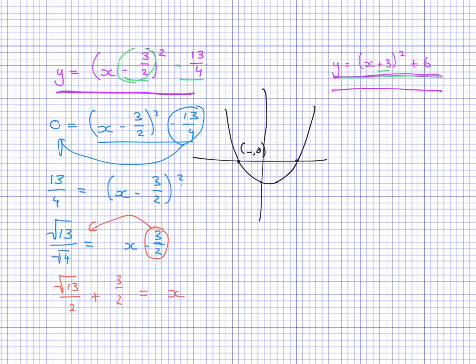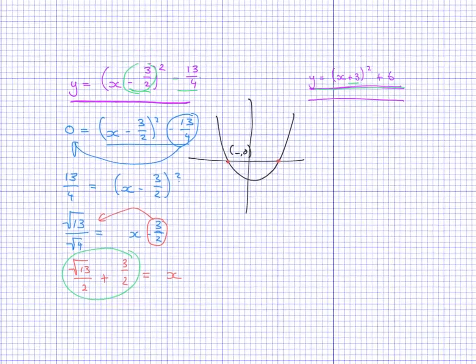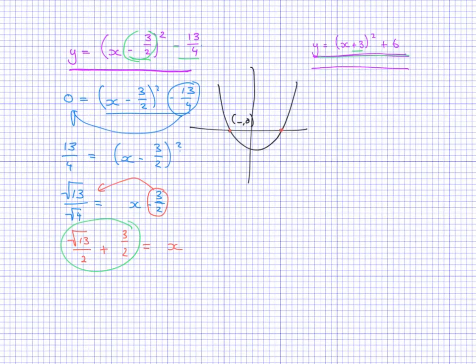Now you might remember that quadratics can have two possible x-intercepts, and in fact this one does have two possible x-intercepts, but what we've got here on the left-hand side is only showing us one possible x-intercept. So what's happened? Where have we made a slight error? And it comes down to a tiny detail that is always the thing that people forget.